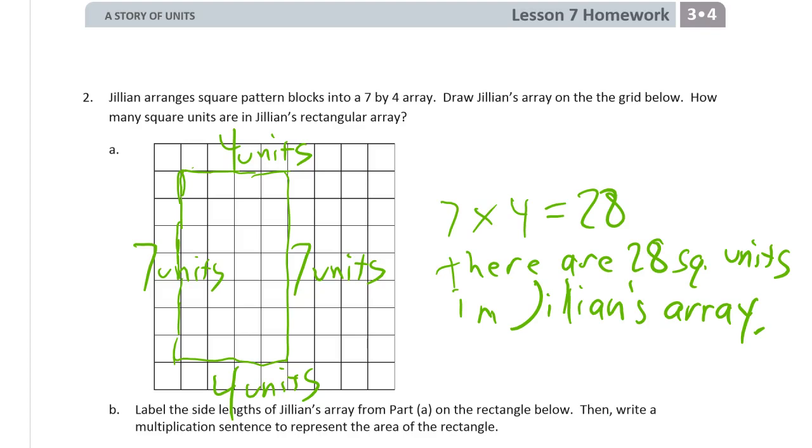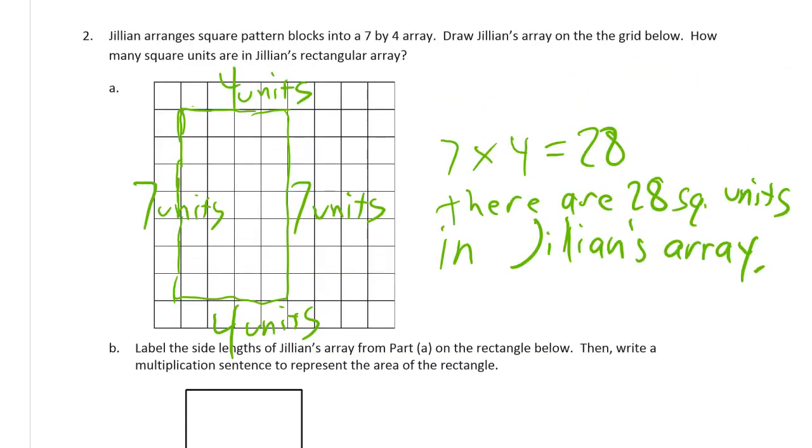In Jillian's array. Let me just clean this up a little bit here. It looked a little unreadable there. And that 8 and the 28 is pretty sloppy too. Let me erase that and do that over. There. That's easier to read.